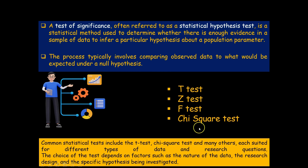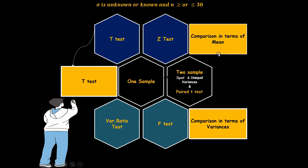The common statistical tests of significance include t-test, z-test, f-test, chi-square test, and many more. The choice of test depends on factors such as the nature of the data, the size of the data, the research design, and the specific hypothesis that has to be investigated.